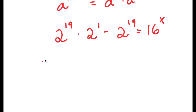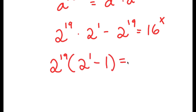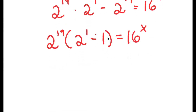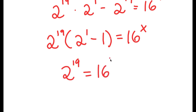From here, if I factor out 2 to the power of 19 from the left-hand side, I get 2 to the power of 19 times (2 to the power of 1 minus 1) is equal to 16 to the power of x. And 2 to the power of 1 minus 1 is simply equal to 1, and anything times 1 is itself, so I have 2 to the power of 19 is equal to 16 to the power of x.